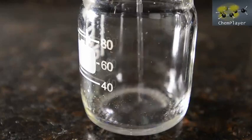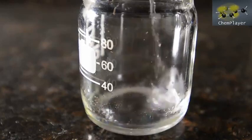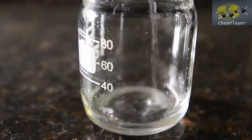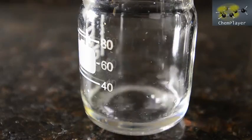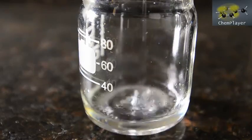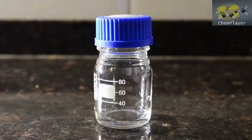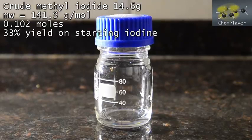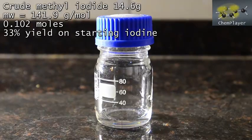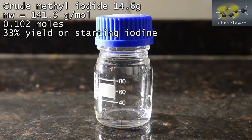It's a bit of a disappointment. This is clearly crude methyl iodide, but it has a more putty aroma than usual so it's not as pure as we're used to. But there's not that much. In fact we've got 14.6 grams, which if pure represents a 33% yield on starting iodine. This is less than half the yield we got with the ethanol reaction. So where did the iodine go to?